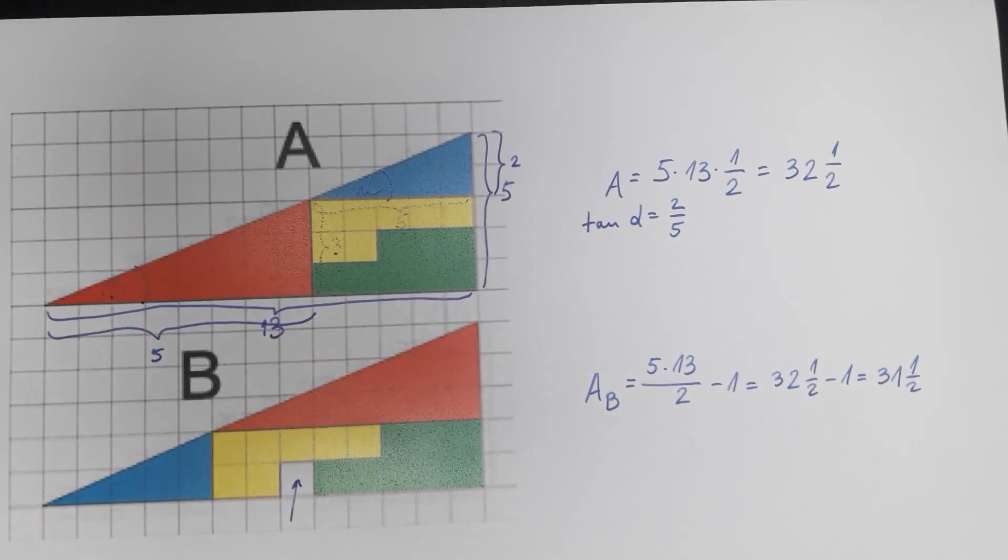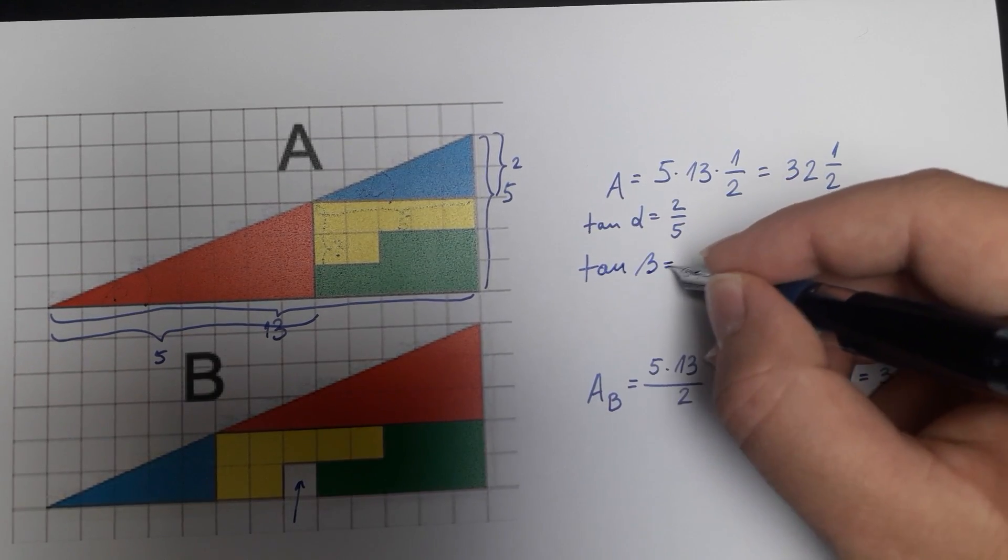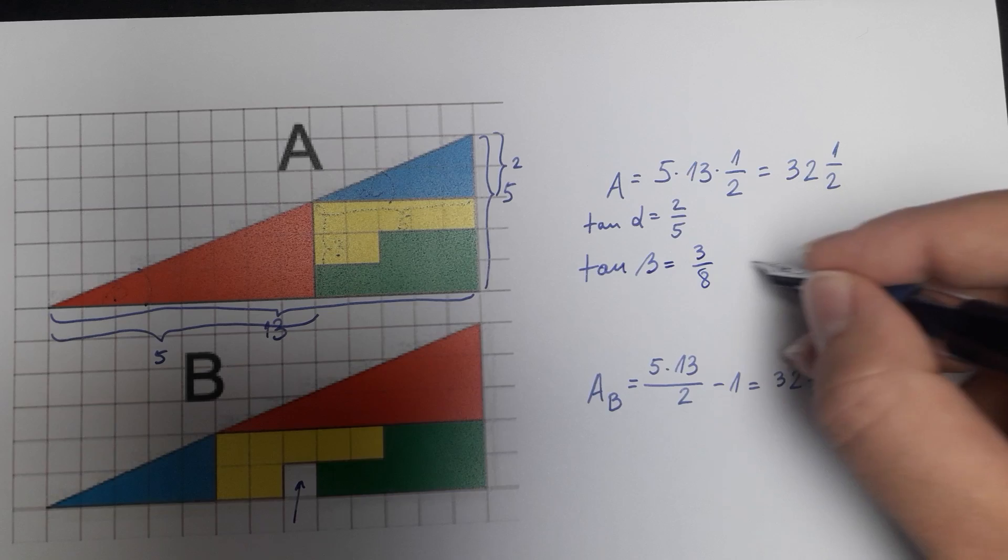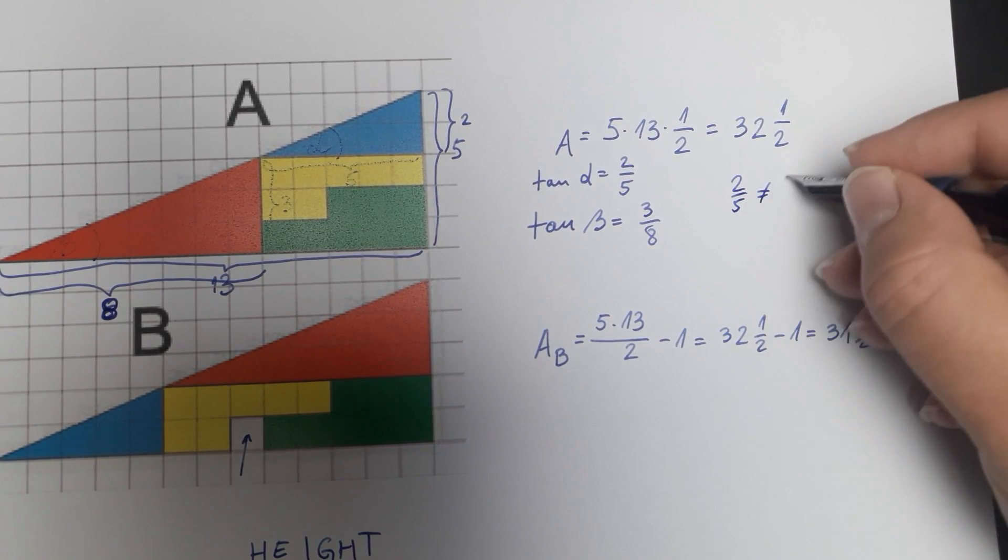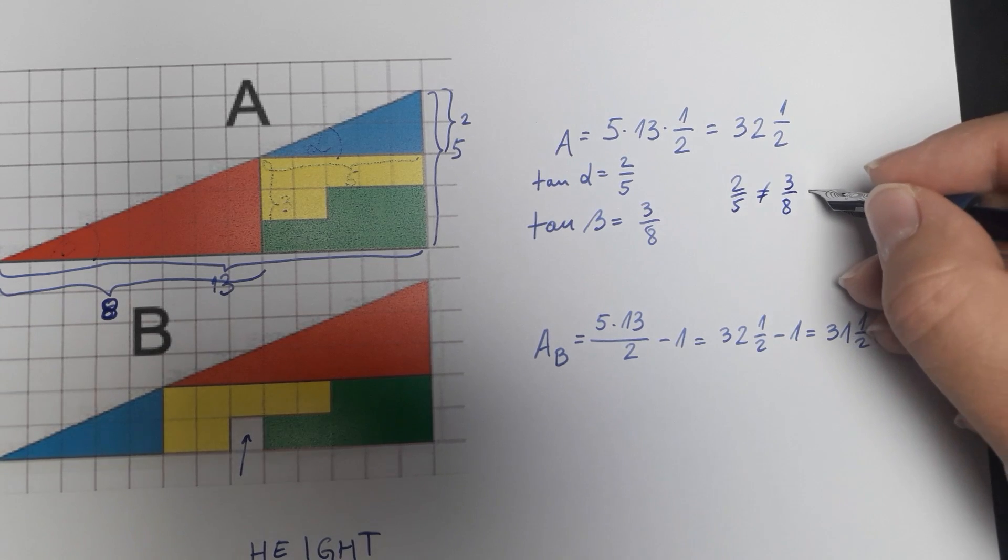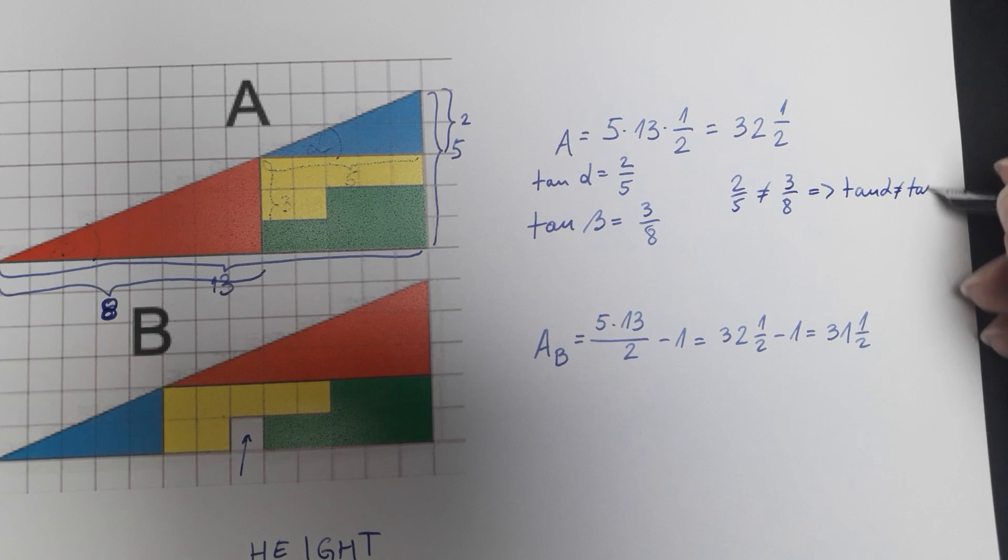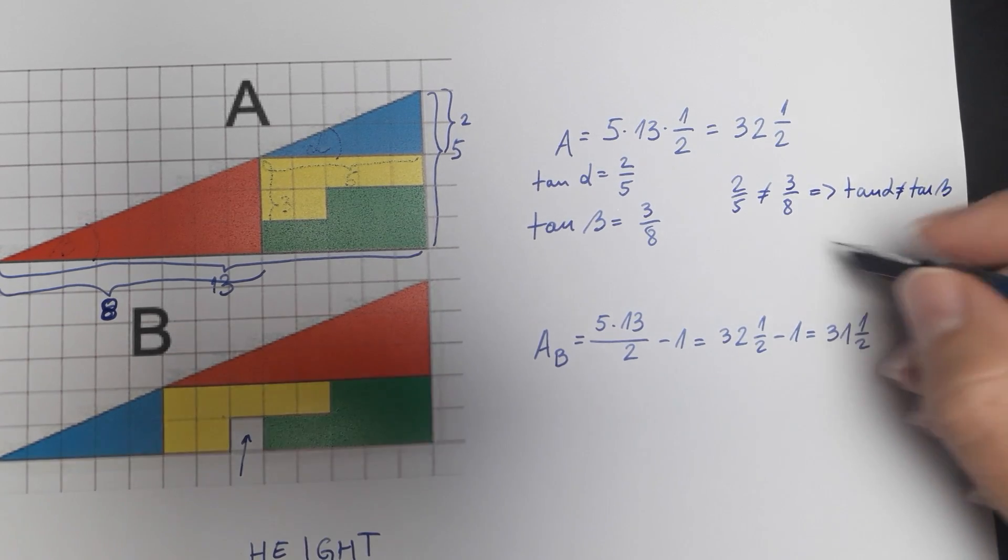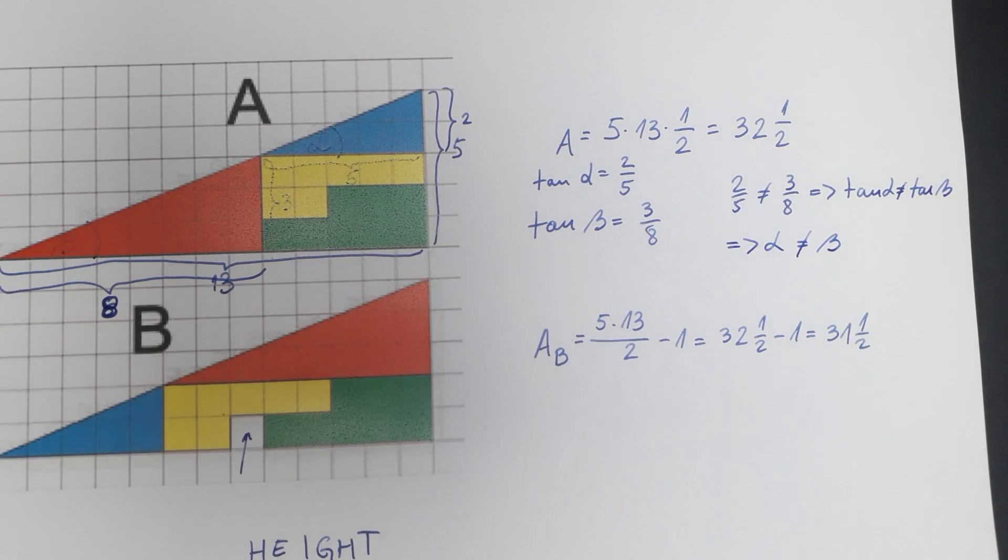We can also see that tan of the angle beta is equal to 3 divided by 8. As 2/5 is different than 3/8, that means that tan of alpha is different than tan of beta. Well that also means that alpha and beta are not the same angle.